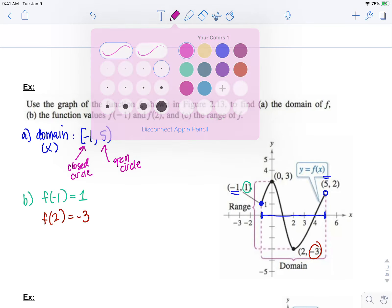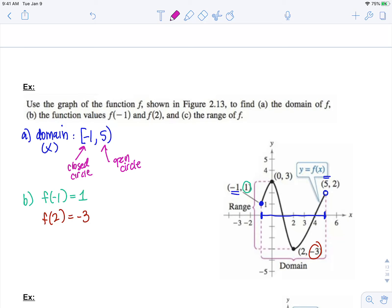Lastly, they're asking us to find, in part c, the range of our graph. The range is all possible y values. So if I look at this graph, remember that y goes down and up.